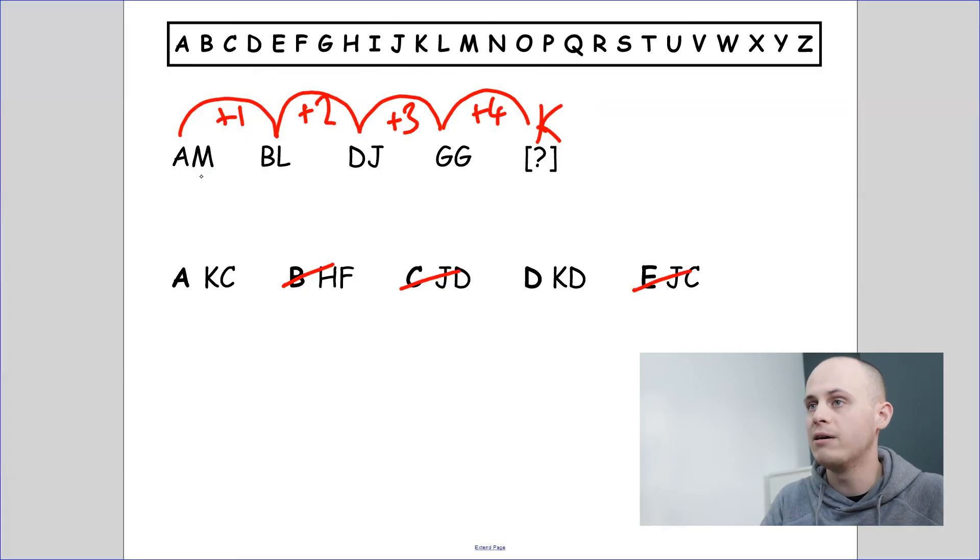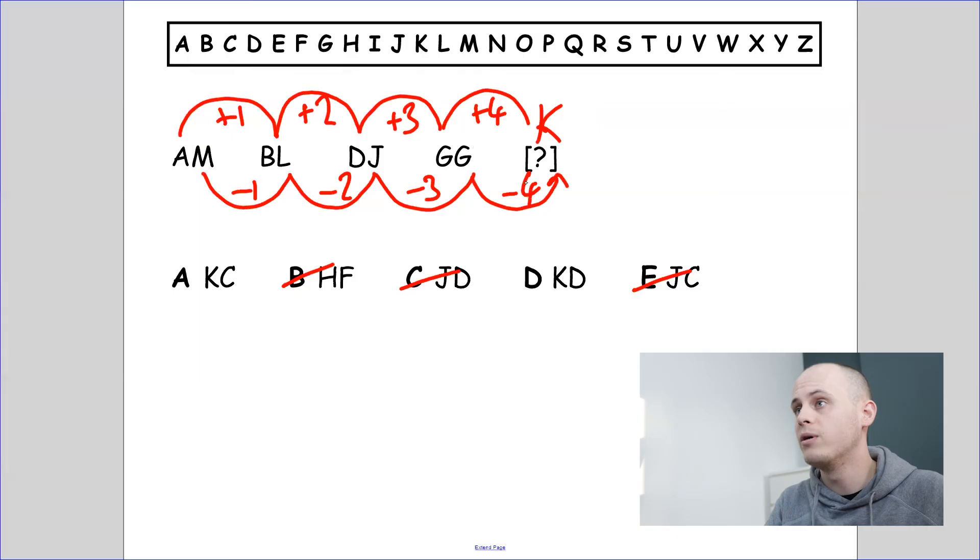Same thing with the second letter now. M to L is minus one. And L to J is minus two. So it looks like we've got the same sort of pattern going on. But let's check. Always check. J to G, one, two, three, is minus three. The next logical solution is minus four. So G minus four is going to give us one, two, three, four, a C. So the answer is KC, which is A.